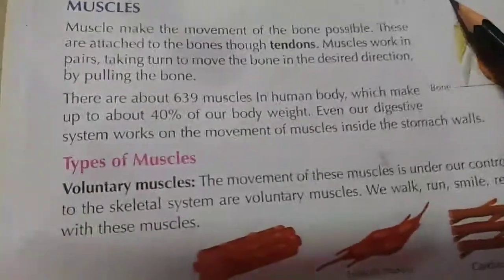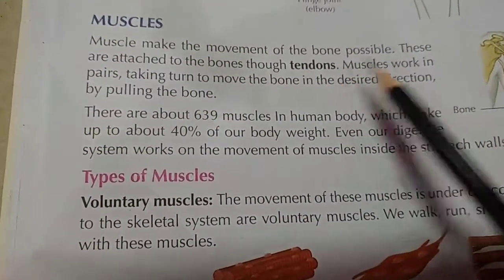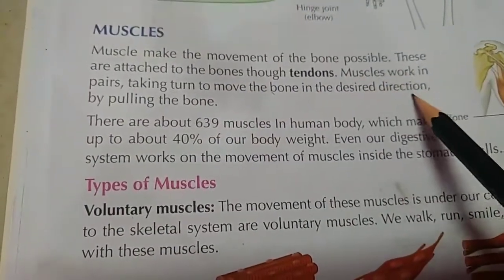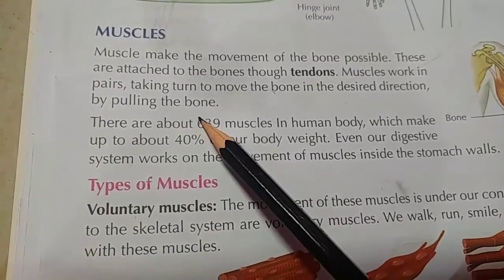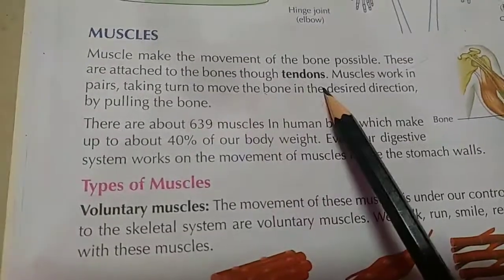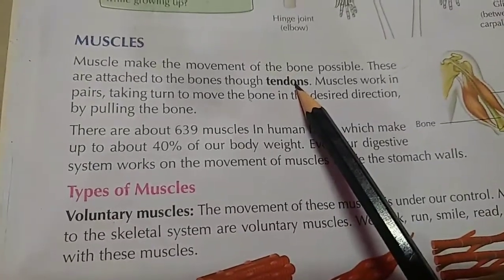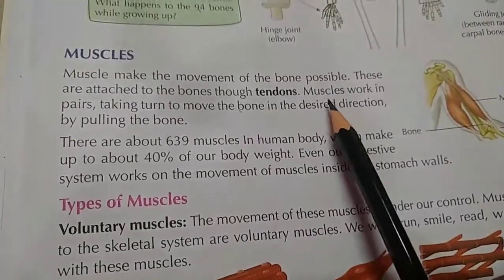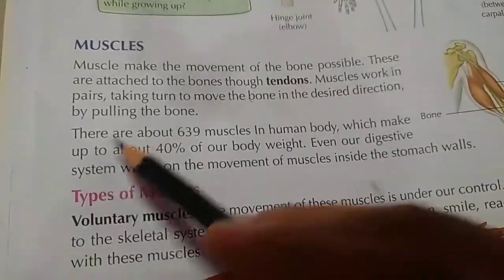Muscles make the movement of bones possible. They are attached to the bones through tendons. When bones are connected to bones, that is called a ligament. Muscles work in pairs, taking turns to move the bone in the desirable direction by pulling the bone.